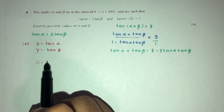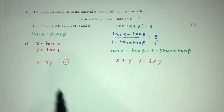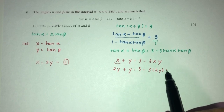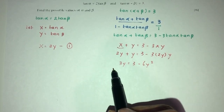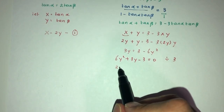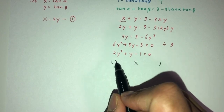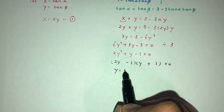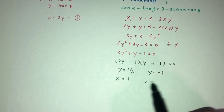Substituting: x equals 2y from equation 1. In equation 2: x plus y equals 3 minus 3xy. Replacing x with 2y: 3y equals 3 minus 6y squared. Rearranging: 6y squared plus 3y minus 3 equals 0. Dividing by 3: 2y squared plus y minus 1 equals 0. Factorizing: (2y minus 1)(y plus 1) equals 0. So y equals one half or y equals minus 1. Corresponding x values: when y equals one half, x equals 1; when y equals minus 1, x equals minus 2.